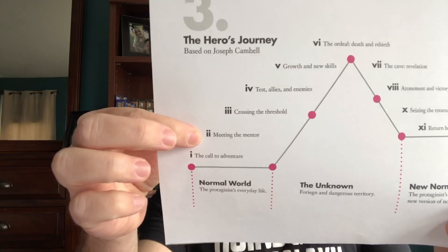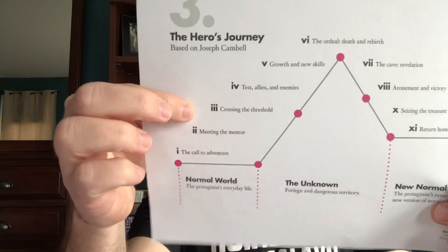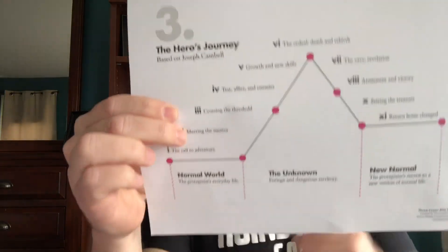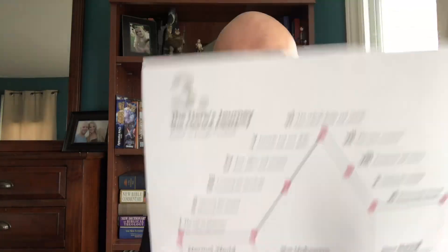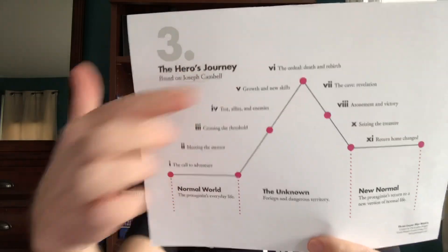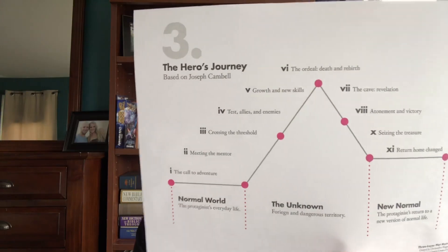In this journey, we have the second point: meeting the mentor. This can be people that are older, wiser sages, or people that have skills the main protagonist is going to need in their adventure. Third is crossing the threshold, where they actually enter into this new unknown territory. Point four is tests, allies, and enemies — where the main protagonist is bumping up against things that are challenging him or her, provoking them into this brave new world. Point five is growth and new skills, where they might be learning from their mentors and growing in life. For Lightning McQueen, this is him learning how to drift with Doc through the dirt track.